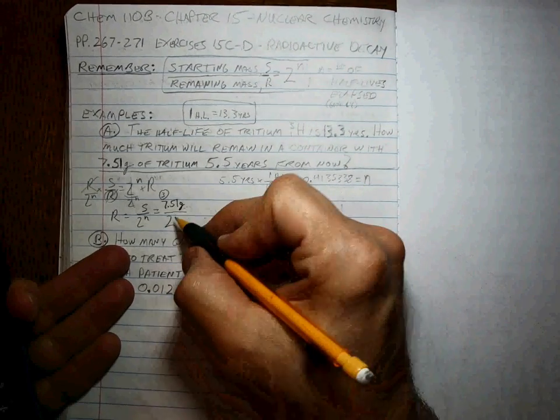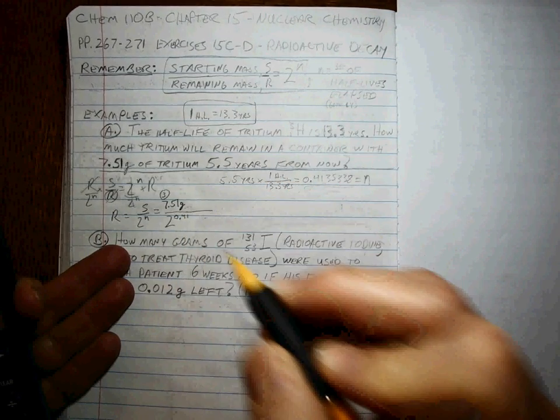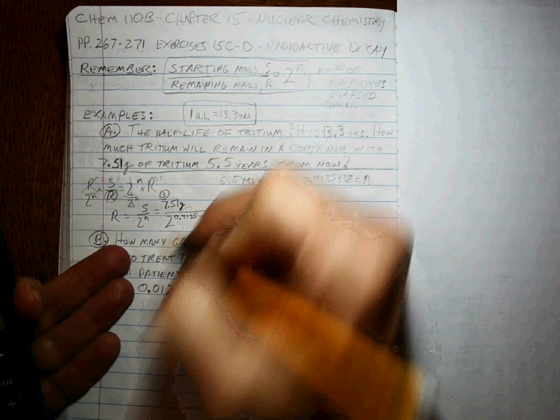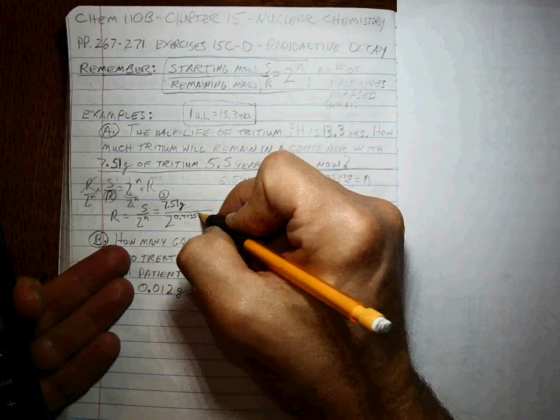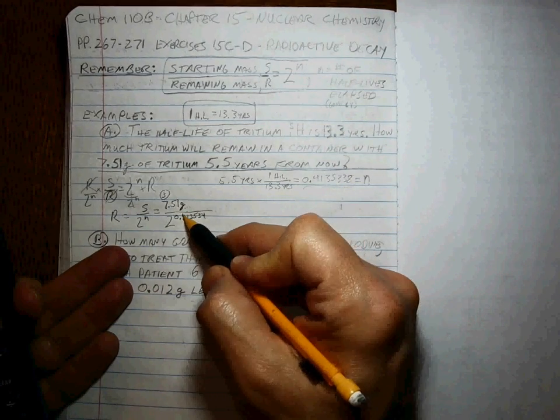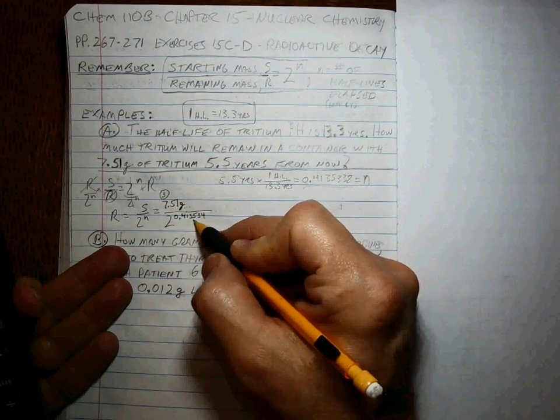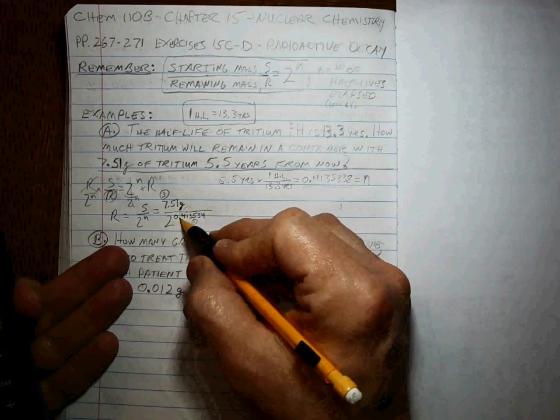We're plugging that in to 2 to the 0.413534. And it doesn't matter how many sig figs you have, really. If this is 3, I would use 5 in the value of N. Just make sure you have plenty more.